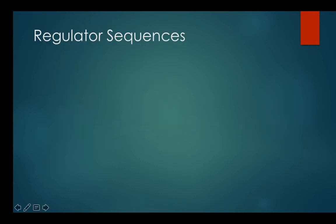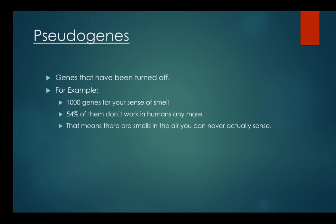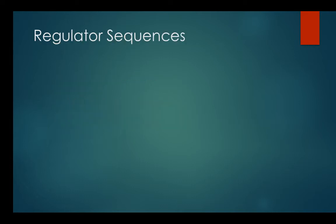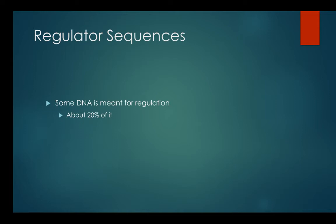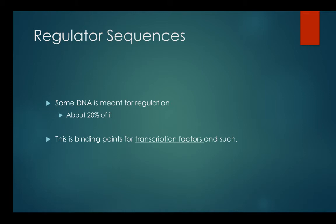Pseudogenes account for a small amount of our DNA. If 1.5% of our genome is 21,000 genes, adding 1,000 turned-off genes would still only bring us to about 2% of the genome — pseudogenes are there, but they're not a big deal. Moving on to regulatory sequences — these are your operons, transcription factors, and regulatory proteins. This accounts for about 20% of your genome, basically binding points for transcription factors and promoter sequences. So we now know about 21.5% of our genome.